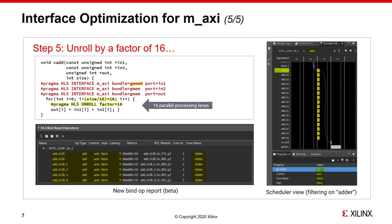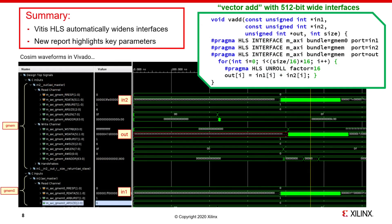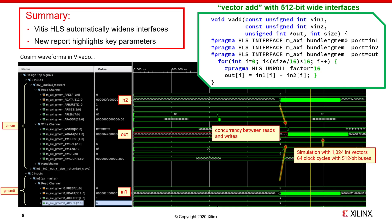After C synthesis, we can verify the parallelism in the schedule viewer of Vitis HLS. Here's the result after making these changes — with the adapter code change, the termination loop variable change, and adding the unroll pragma. We do have a wider interface that we can verify in the waveform viewer of Vivado. The waveforms are organized per bundle: gmem and gmem0. We can see in2, out, and in1, and verify that there is concurrency between the read and write operations to the output. In this simulation, I am sending 1024 integers for both inputs, and I see the expected 64 clock cycles with 512-bit wide buses in the RTL co-simulation launched from the Vitis HLS IDE.